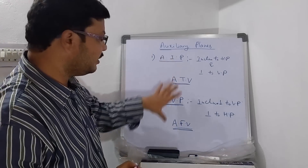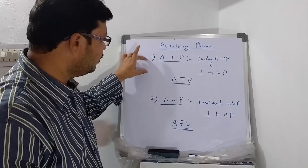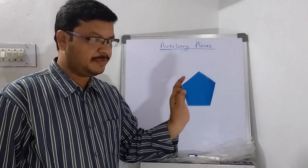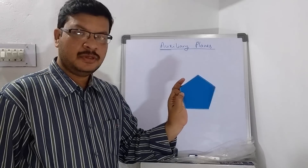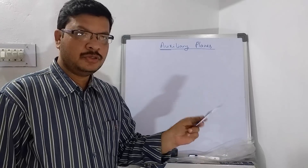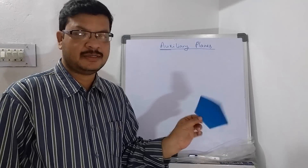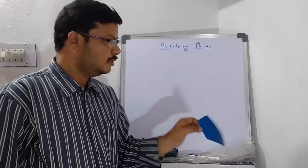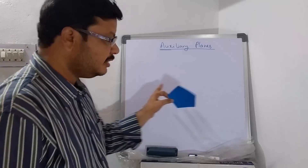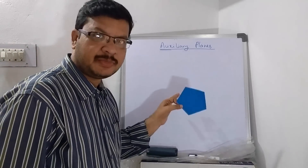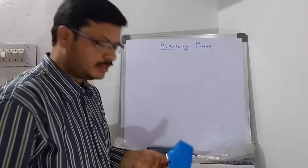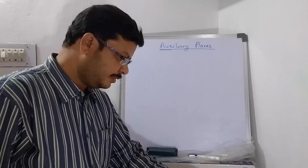So that is the brief introduction about the two auxiliary planes. Now I will solve a pentagonal plane problem using both methods — first the change of position method, which is our general method, and after that the auxiliary plane method.